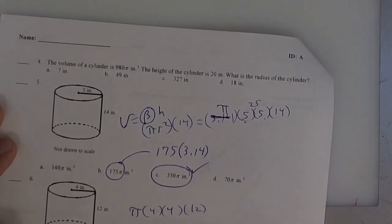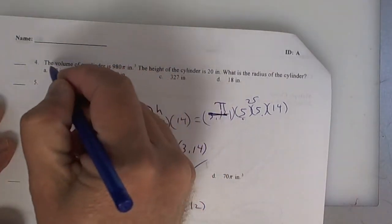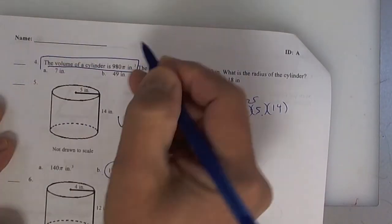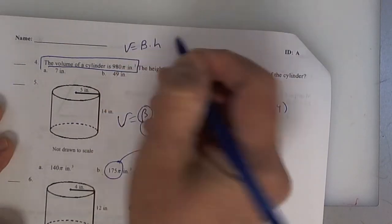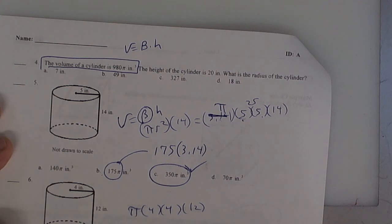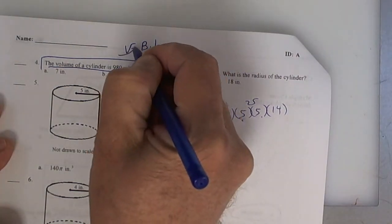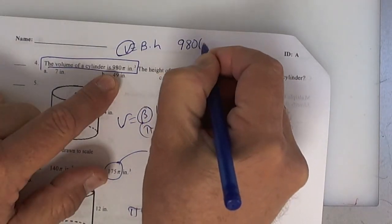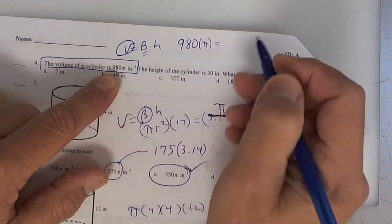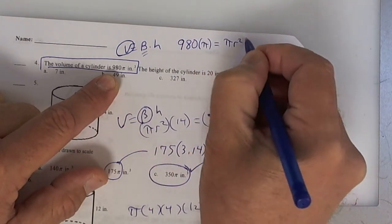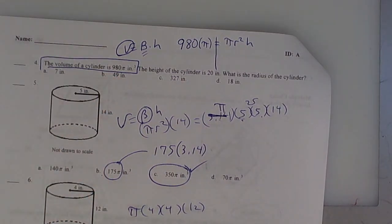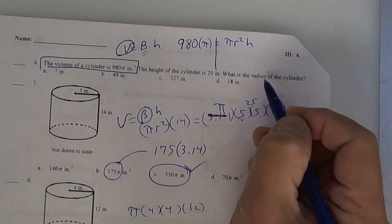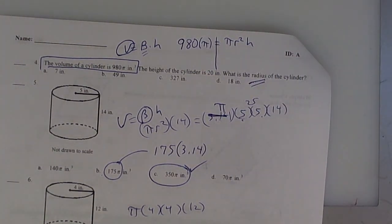Number four — I missed it, so let's work that one. It says the volume of a cylinder. Write down your equation: volume equals big B times H. Once you write down your equation, substitute. If they tell you the volume, put 980 pi in place of V. So 980 pi equals pi radius squared times the height. They want you to find the radius. Any questions so far on what I did?